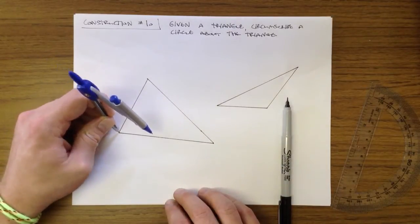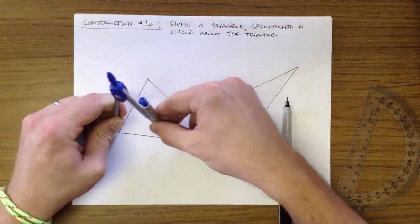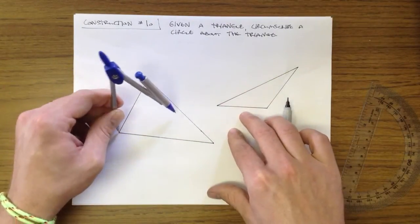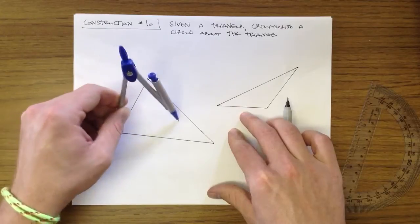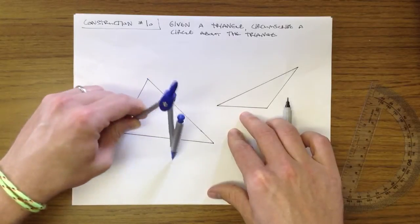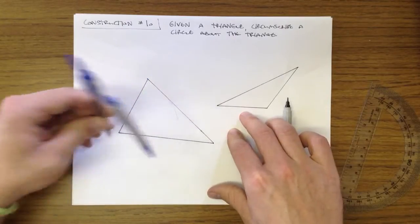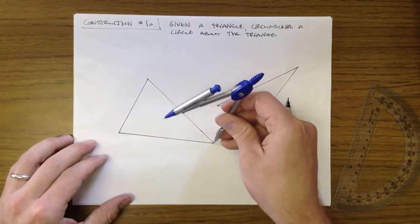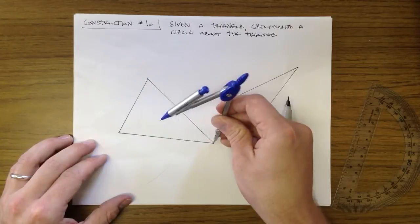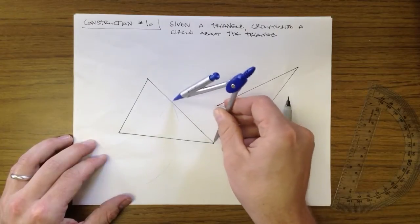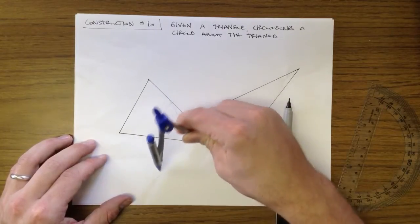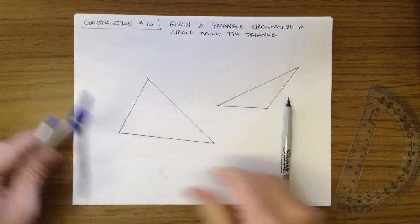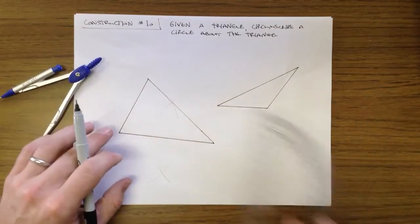With that said, we're going to draw the perpendicular bisectors of at least two of our sides. We could do all three, but if they're all going to be concurrent — if they're going to intersect at the same point — you only need two. You don't need to do the third.